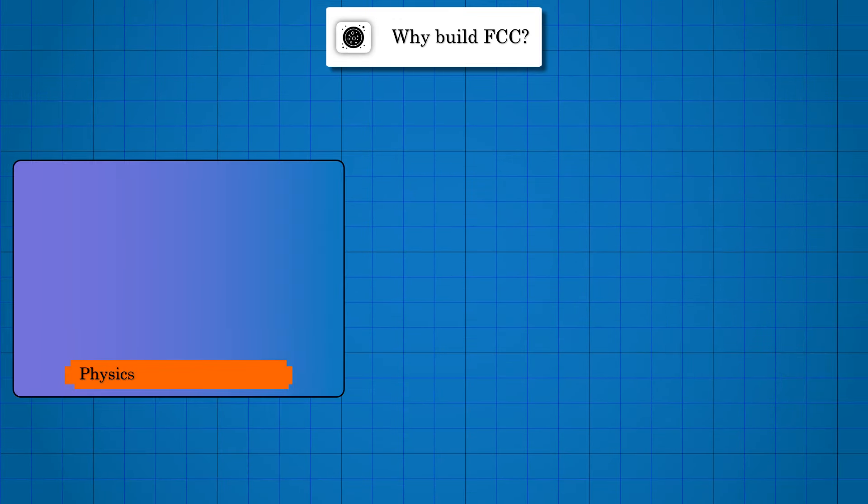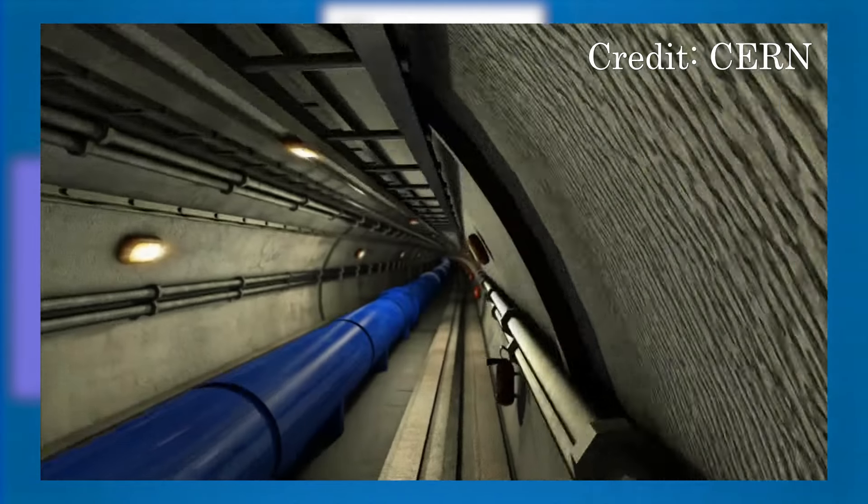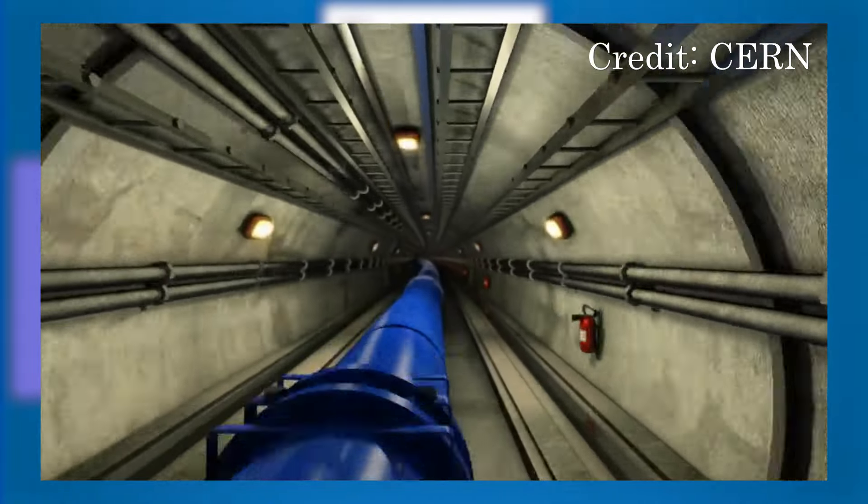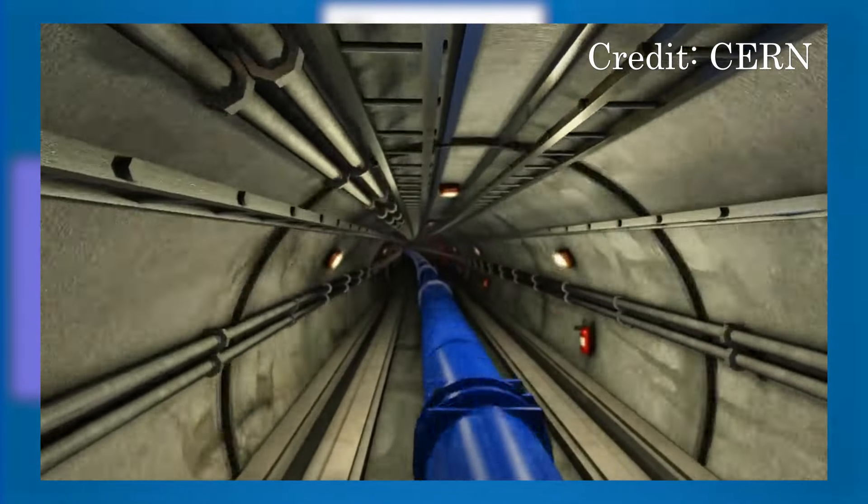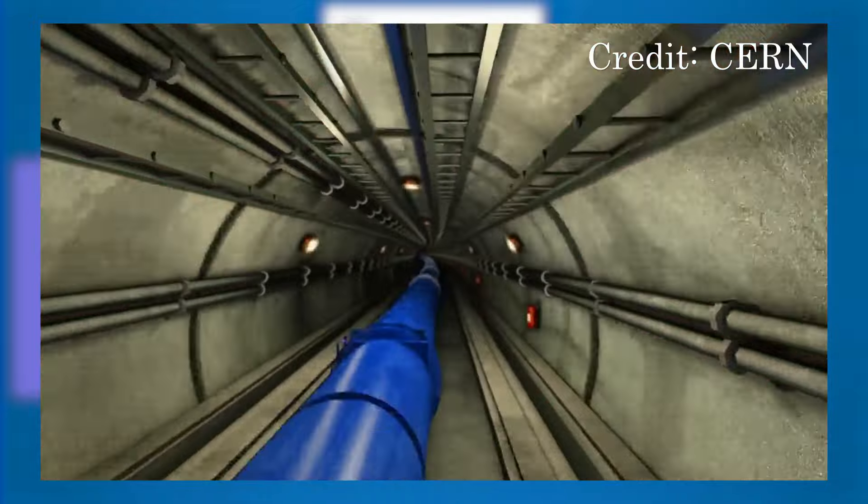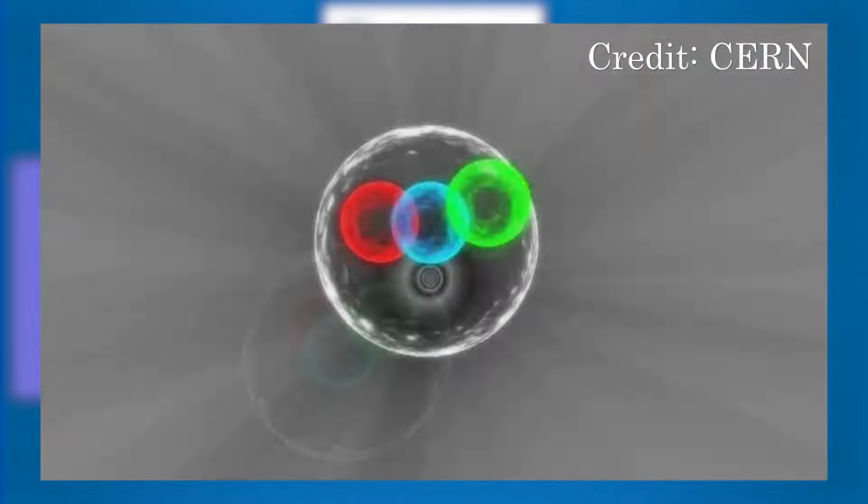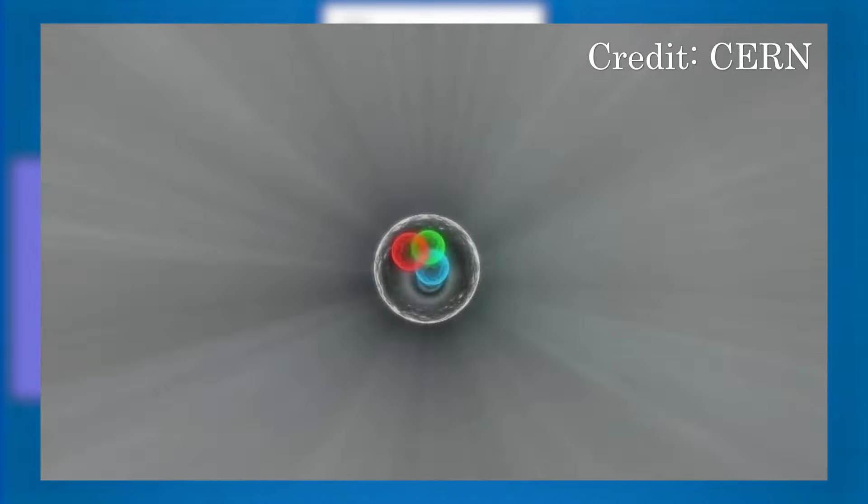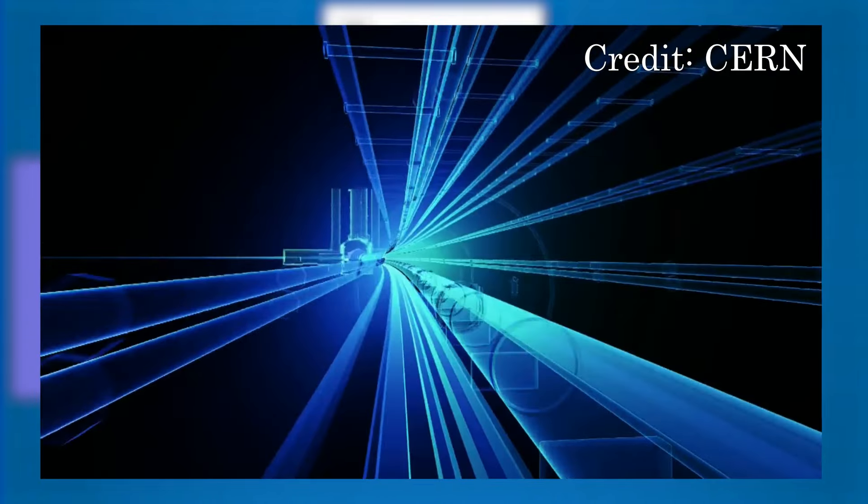Particle colliders are like a massively huge microscope, which allows us to directly explore small-distance physics which would otherwise be impossible. To probe physics at such a small distance, one needs extremely high energy and intensity. To create such high-energy particles, one must accelerate particles to a very high speed and energy for a long distance in time.